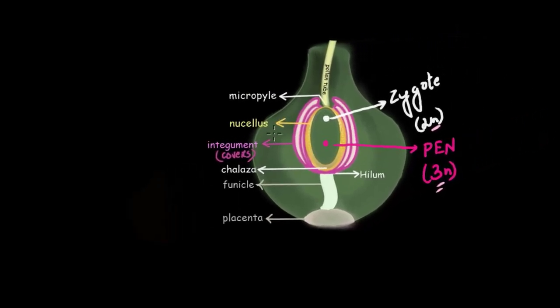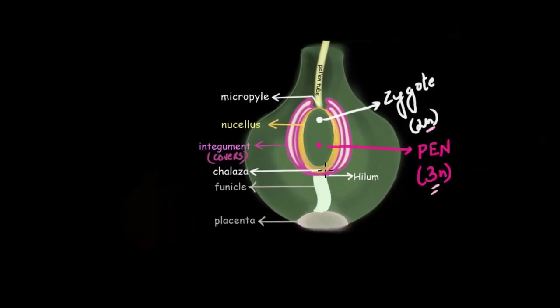On your screen is an enlarged ovary of a flower with a single ovule showing fertilization. The pollen tube brings two male gametes: one fuses with the egg to form the diploid zygote, and the other fuses with the polar nuclei to give rise to the triploid primary endosperm nucleus. We discussed how this happened in our previous video. Now let's start the story post-fertilization.